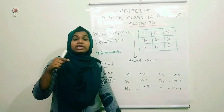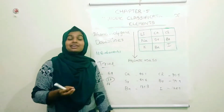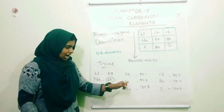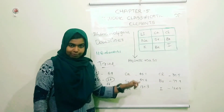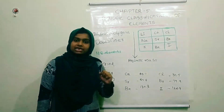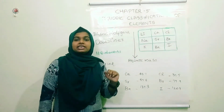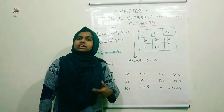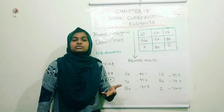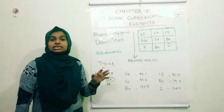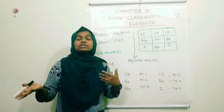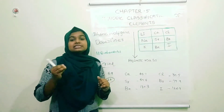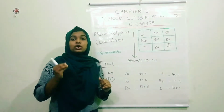The second element's atomic mass is approximately equal to the average of the first and third elements. This is the same for all triads — this is the classification. However, this classification is not applicable for all elements and is not useful nowadays.